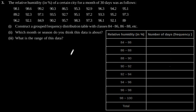Exercise 14.2, question number 3: The relative humidity of a certain city for a month of 30 days was as follows. Construct a grouped frequency distribution table with classes 84 to 86, 86 to 88, etc. As given in the question, the class interval will be 84 to 86.